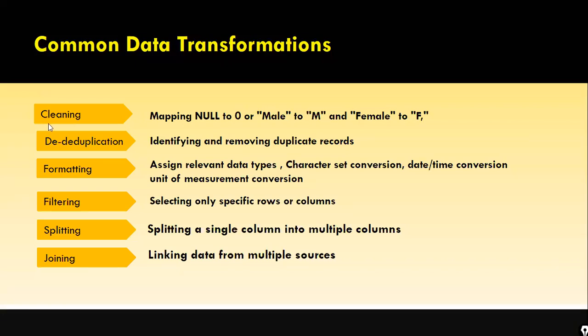Apart from duplicates, commonly faced issues include columns not assigned the correct data type. You need to make sure all columns you are going to use are in the correct format and data type. The values in your dataset should also be consistent across rows. For example, in a date column, some records use a forward slash as a delimiter to distinguish month, year, and date.